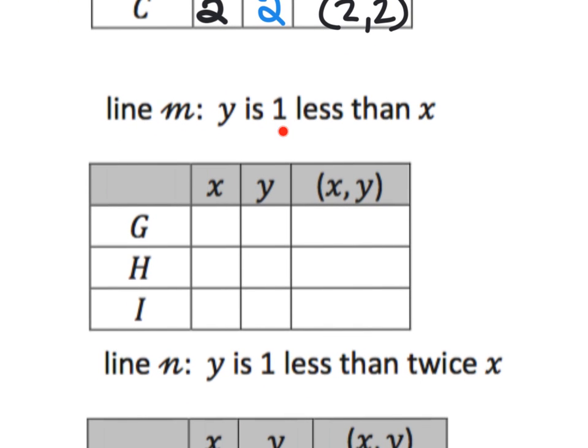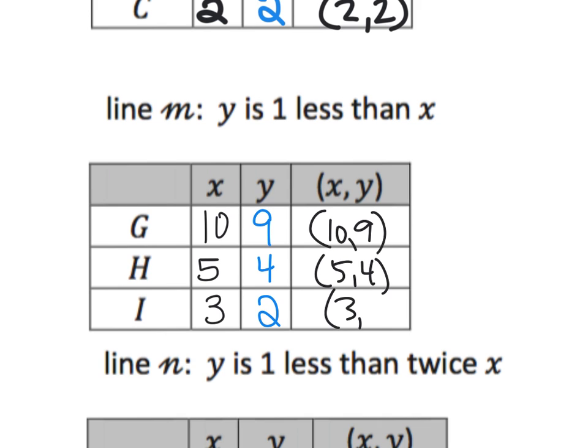Let's move to a new rule: y is one less than x. So I get to choose any values for x. Let's choose 10, let's choose 5, and let's choose 3. What are our y-coordinates? Well, the y-coordinate is always 1 less than x. 10 minus 1 is 9, 5 minus 1 is 4, 3 minus 1 is 2. And there's our coordinates: 10, 9, 5, 4, and 3, 2.